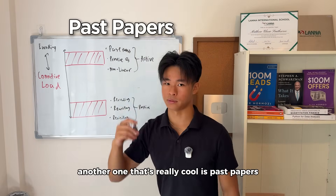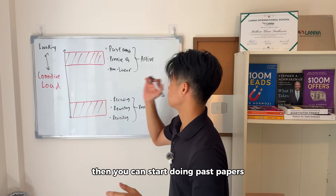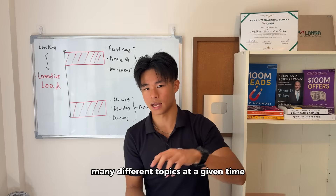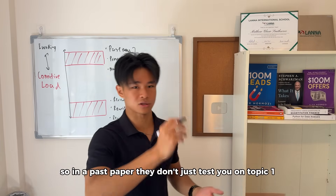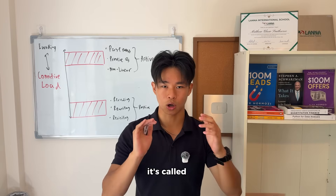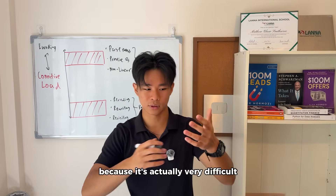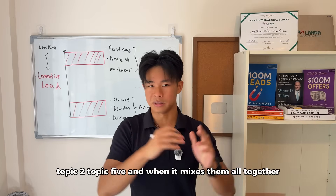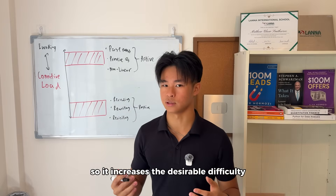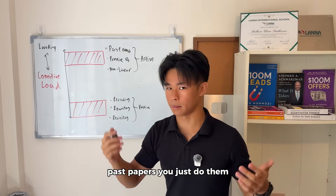Another high cognitive load method is past papers. I feel like once you've covered about 80% of the material in the syllabus, you can start doing past papers. They're very helpful because they interleave many different topics at a given time. In a past paper, they don't just test you on topic one — they test you from topic one to topic ten. Scientifically, when you mix concepts together, it's called interleaving, and interleaving increases cognitive load because it's difficult for your brain to switch between topics. This increases the desirable difficulty of your study session, which is why past papers are so helpful.